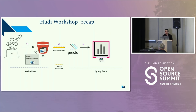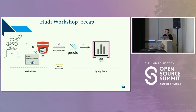On the Hoodie side, we're going to write the data to the Hoodie table. From there, we're going to use Presto to query the data and use the Glue Hive Metastore. In the first part in the Jupyter Notebook, we're actually going to query through Spark, and then at the end we'll show you how to query through the Presto CLI when you SSH into the Presto EC2 instance.